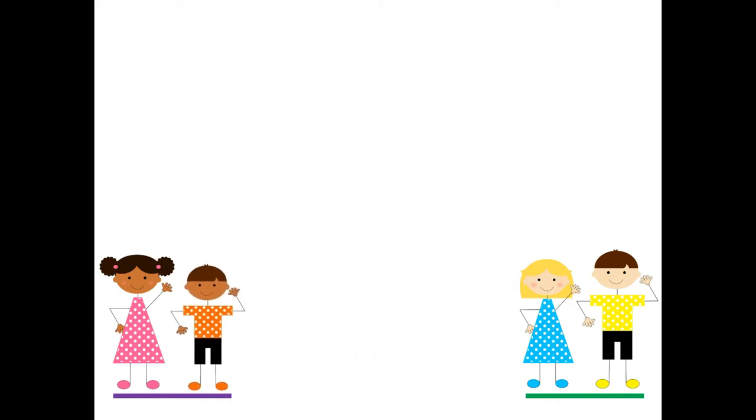Then the second child takes two big steps and joins the first person. And now what do you see? Do you see two on one side of the room and two on the other side? What could we say? You're right. Two plus two is the same as four.